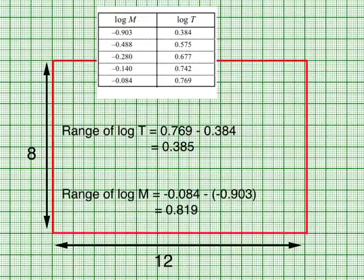For the range of log t, I will approximate it to 0.4. For that of log m, I will approximate it to 0.9. We always overestimate so that all the plot points can be included in this range.